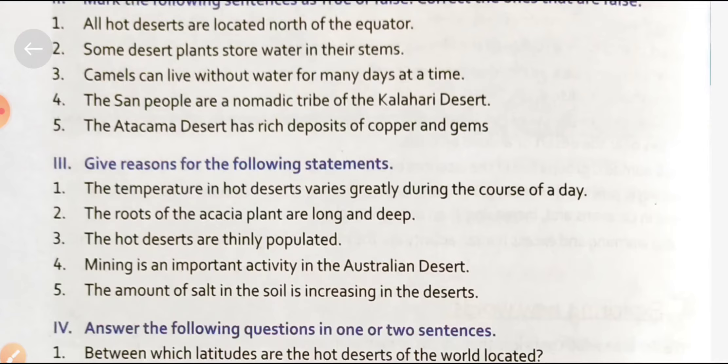Next statement: 'The hot deserts are thinly populated.' The reason is that the extreme climate and lack of water make life in the desert very difficult. As a result, this is one of the most thinly populated regions in the world.